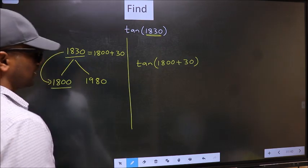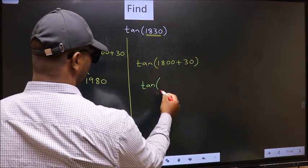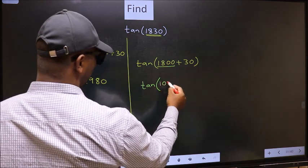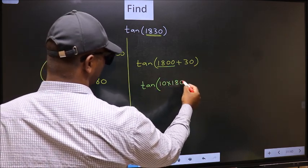Next, tan. In place of 1800, now we should write 10 times 180 plus 30.